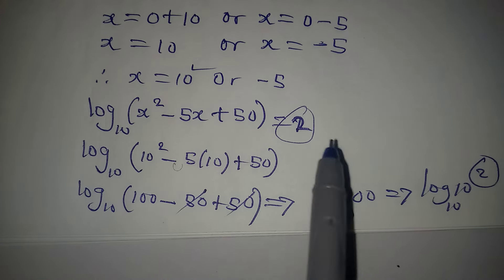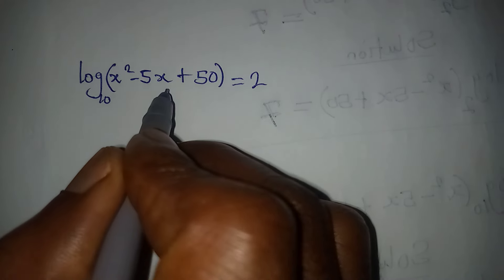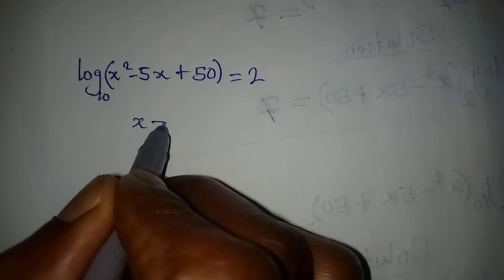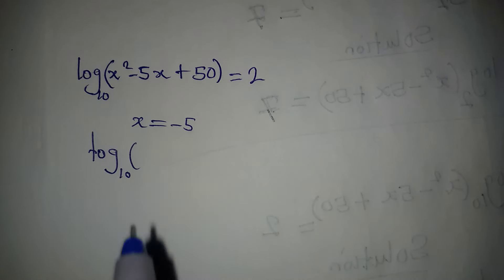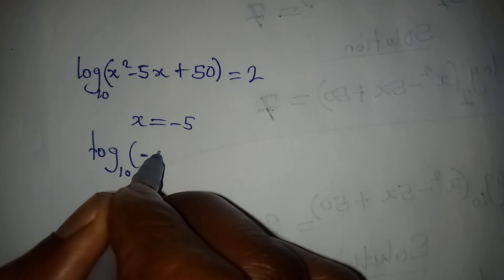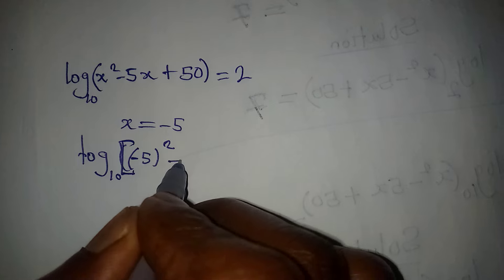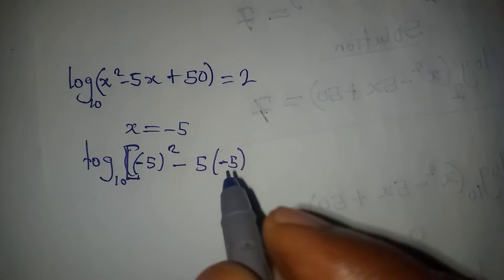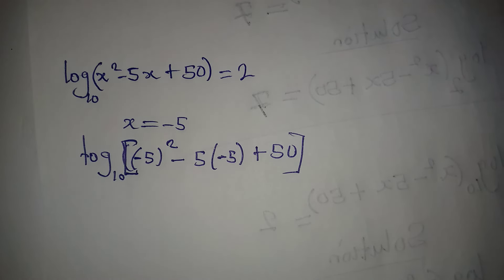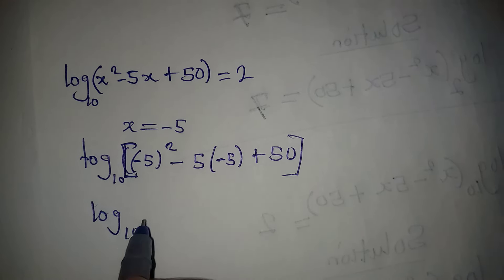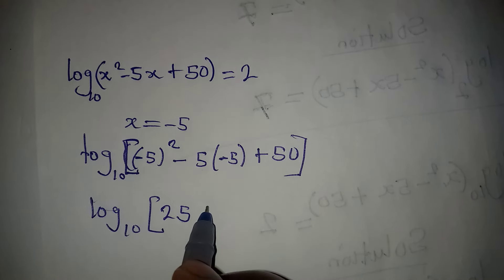Now I will try putting in x = -5 to see if it also satisfies the equation. Substituting into the original: log base 10 of ((-5)² - 5×(-5) + 50). That gives log base 10 of (25 + 25 + 50).